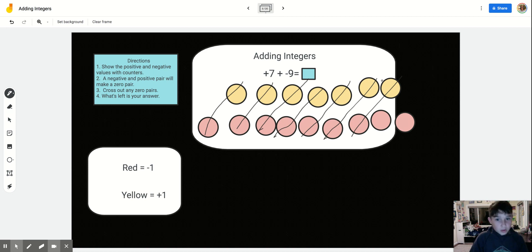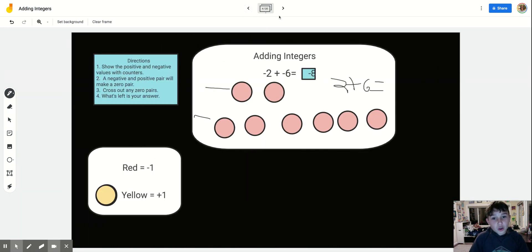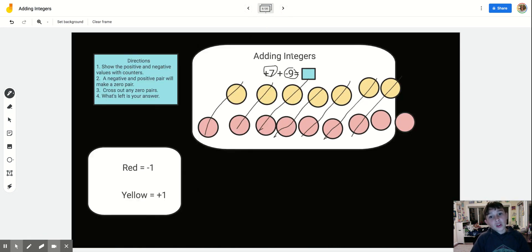And also an amazing strategy is, what's the bigger number? Is it the positive number, or is it the negative number? And if there's a positive and a negative, you know that you have to plus and minus. If it's a negative and a negative, you know that you need to plus them together.